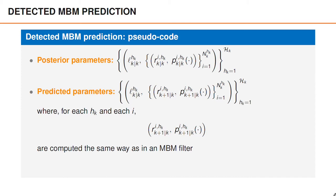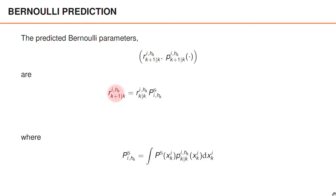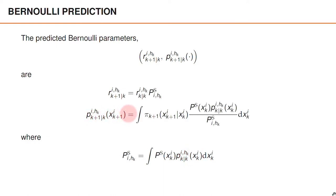A noteworthy difference from the MBM prediction in an MBM filter is that in a PMBM filter, for each multi-Bernoulli, we now have the same number of Bernoullis. For the predicted Bernoulli parameters: the predicted probability of existence is the product of the posterior probability of existence and the posterior probability of survival for this Bernoulli, ps_ih, defined as the integral of the probability of survival and the posterior object density. The predicted Bernoulli state density is given by dividing the probability of survival times the posterior state density by ps_ih, then multiplying by the transition density and marginalizing the previous state. This Bernoulli prediction is exactly the same as in the MBM filter.